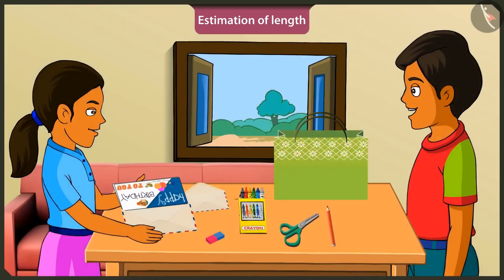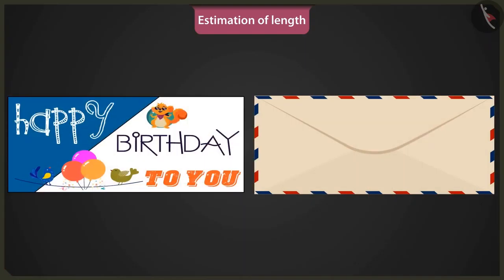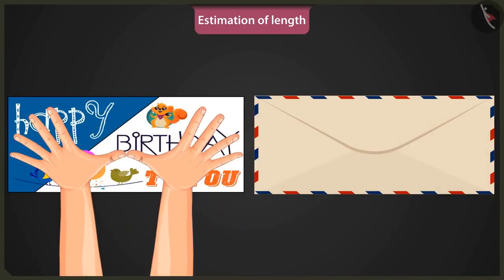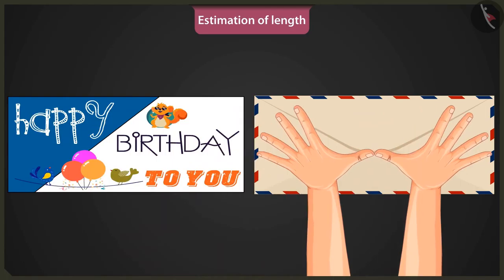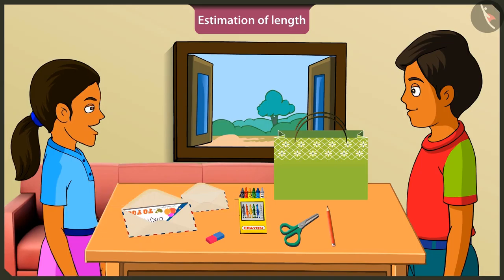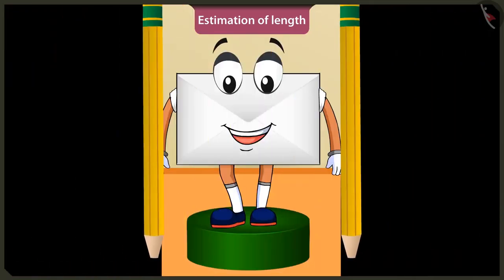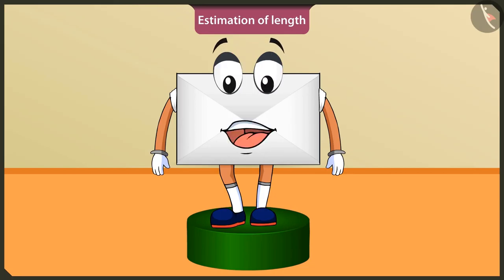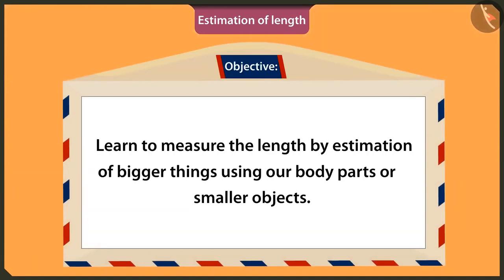That's right, now put your card in this envelope. This is of the same size as your card — the length of this card is two hand spans. Wow, this envelope is of the correct size! Can we estimate the length of everything like this? Yes, kids, we can estimate the length of everything in this way. So today we will use our body parts and other small things to determine the estimated length of objects.